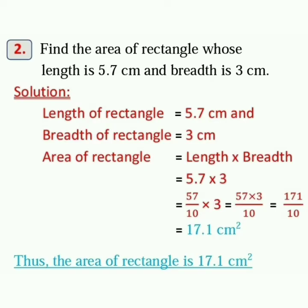Sum number 2: find the area of a rectangle whose length is 5.7 cm and breadth is 3 cm. The length of the rectangle is 5.7 cm and breadth is 3 cm. The formula for area of rectangle is equal to length into breadth, which is 5.7 into 3. We can write 5.7 as 57 upon 10, so 57 upon 10 into 3 is equal to 171 upon 10, which is 17.1 cm square.